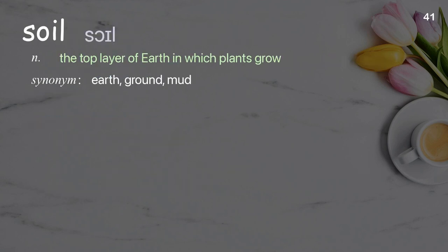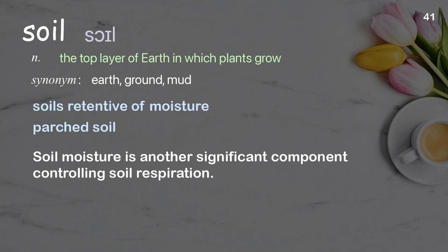Soil: The top layer of earth in which plants grow. Examples: Soils retentive of moisture, parched soil. Soil moisture is another significant component controlling soil respiration.